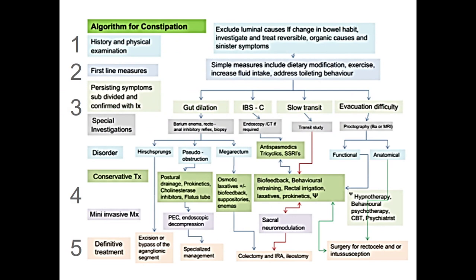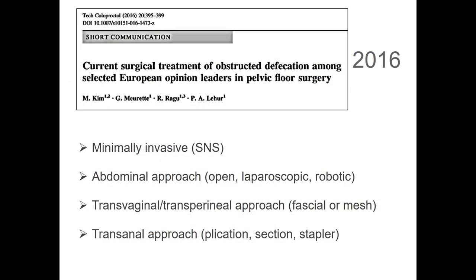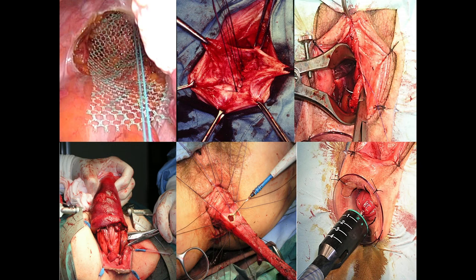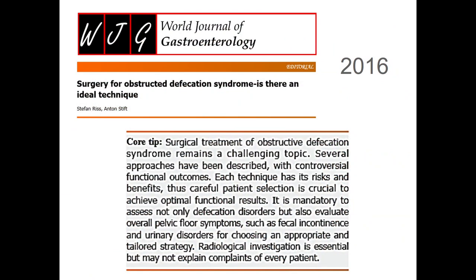The final step of our algorithm: surgical definitive treatment. We have many different forms — minimally invasive, SNS already mentioned, abdominal approach, transvaginal, transperineal, transanal approach. How to select which kind of approach to perform? Surgery for obstructive defecation syndromes — is there an ideal technique? The answer is no. You have to tailor the treatment according to your patient, and in this setting imaging and other investigations can help the surgeon define the best approach to use.